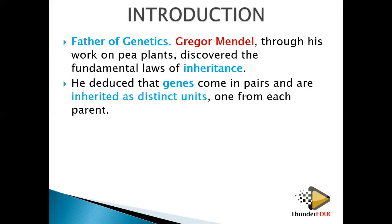Characters like height, size, and skin colour are controlled by two kinds of genes, so they come in pairs and are inherited as distinct units. Each character is inherited differently — one part from the father and one from the mother. Each parent gives one part of the character.